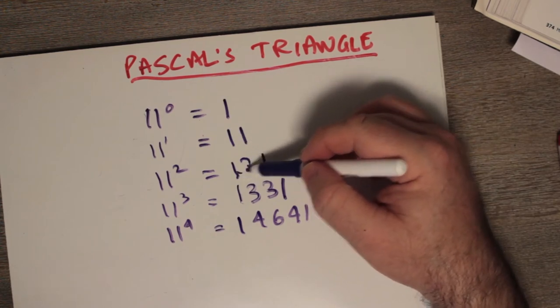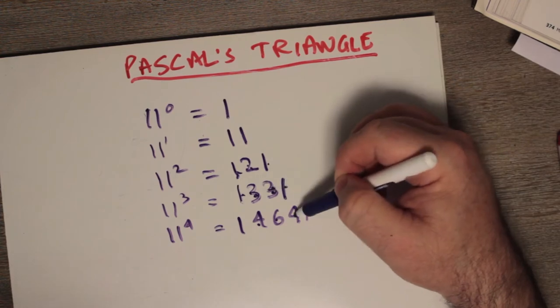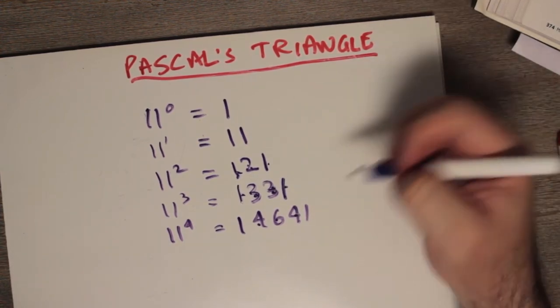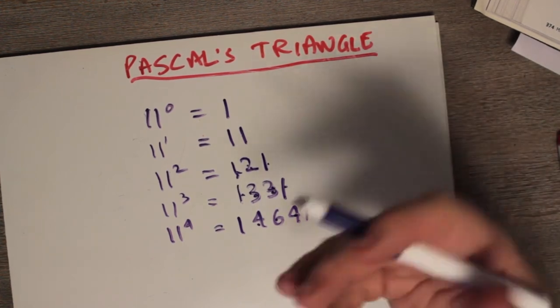One and one make two. One and two make three. Two and one make three. One and three make four. Three and three make six. Three and one make four. So you can see these all regenerate Pascal's triangle. The pattern gets broken.